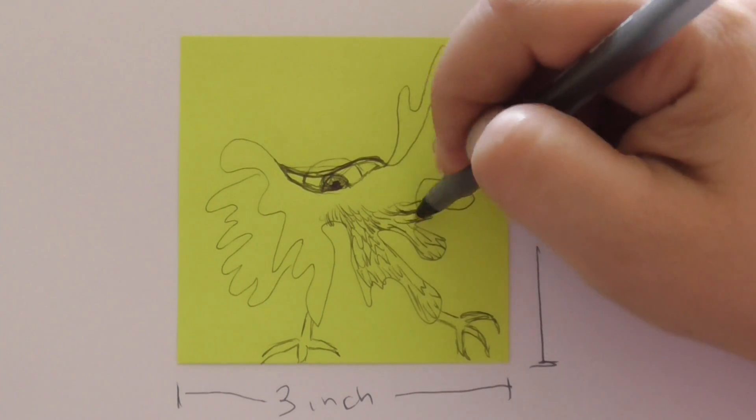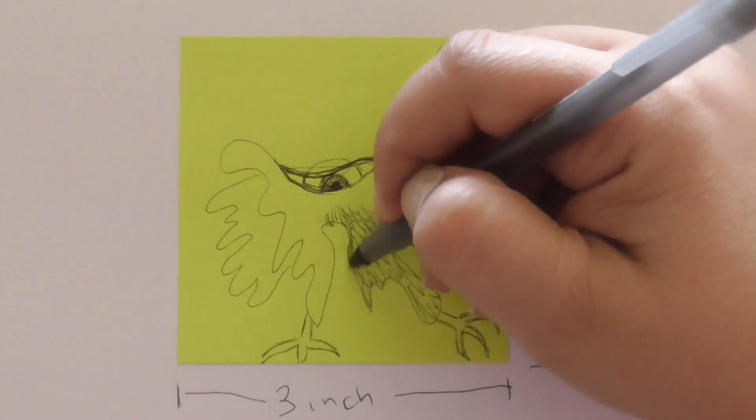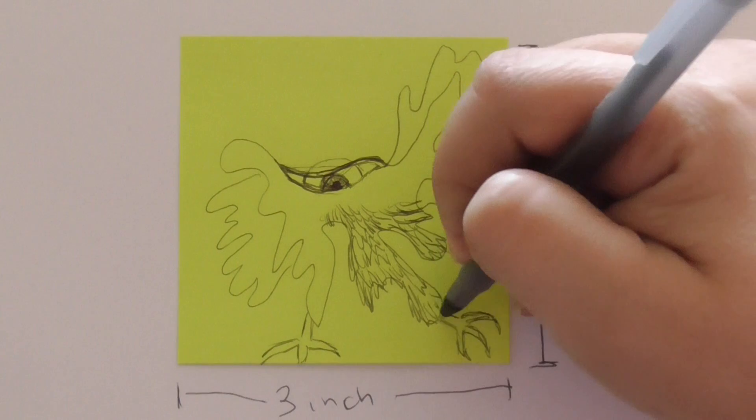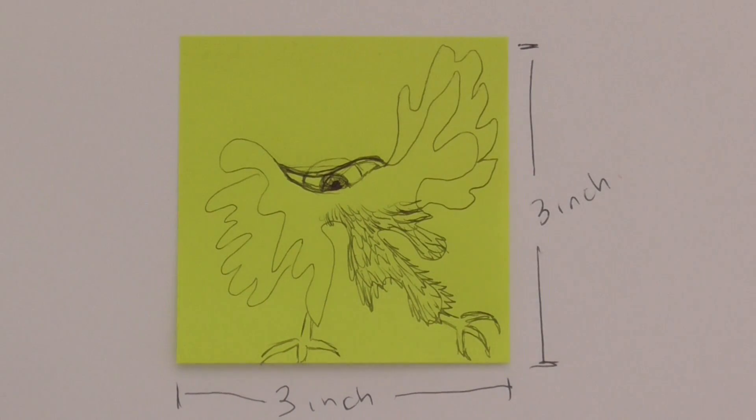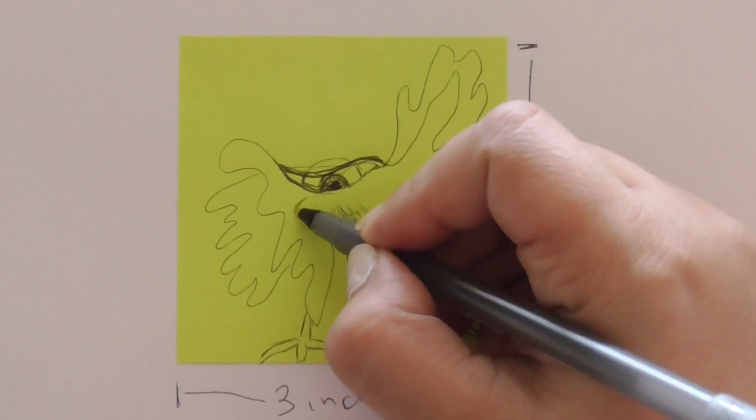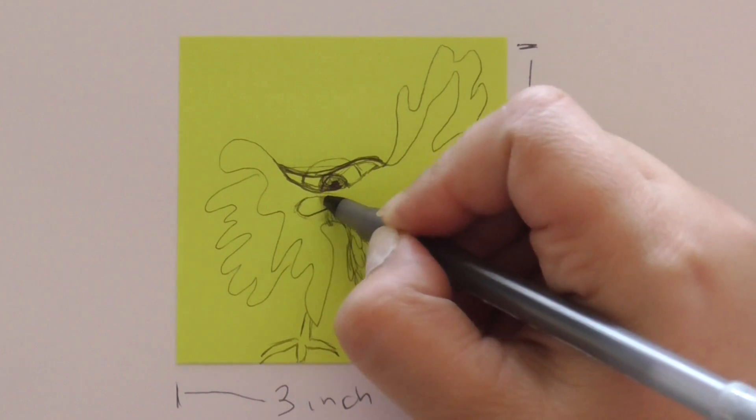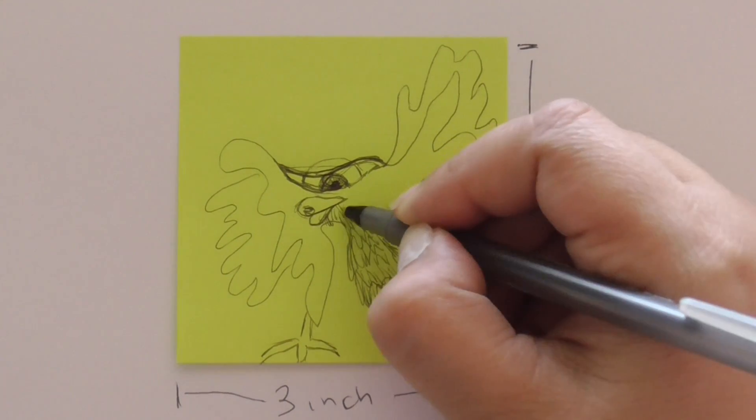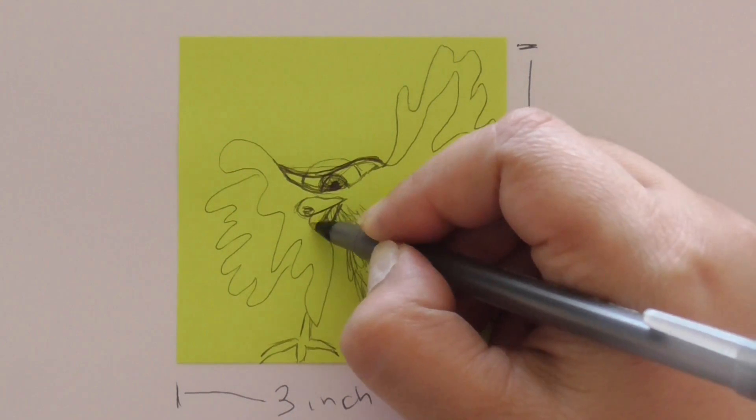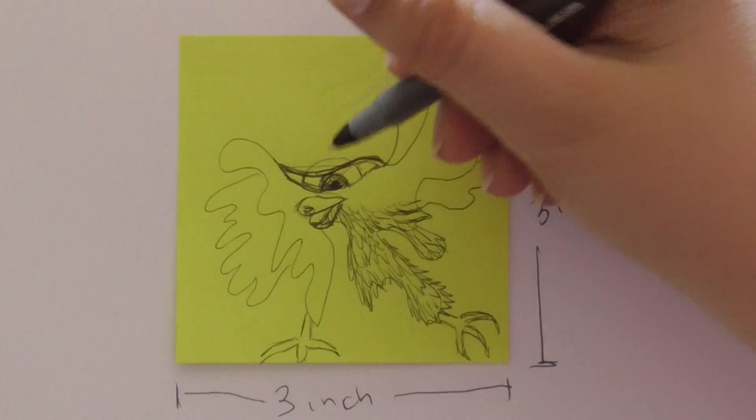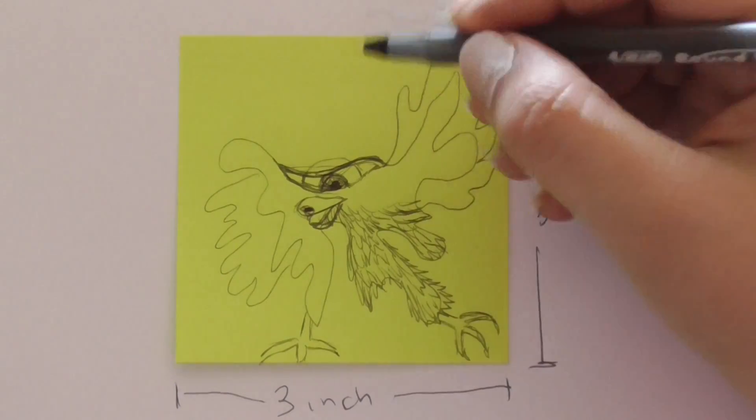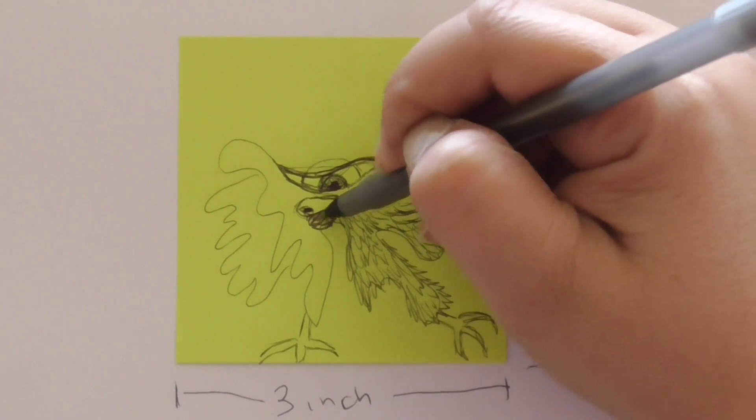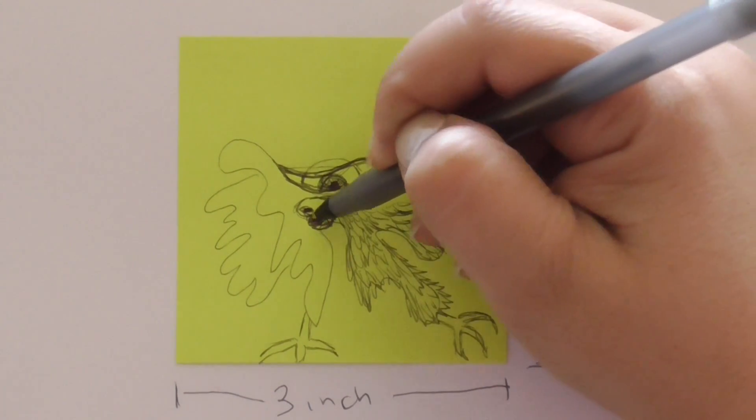I feel like it needs some kind of mouth though. Maybe it has like a... I'm seeing even though I drew some fur over there, I can go ahead and add like a little mouth. I'm gonna add like a little muzzle. It's got its mouth open.